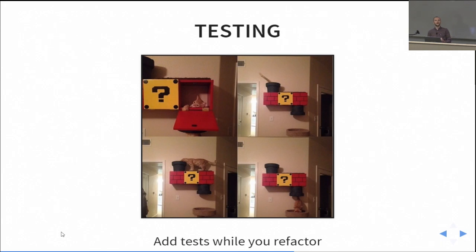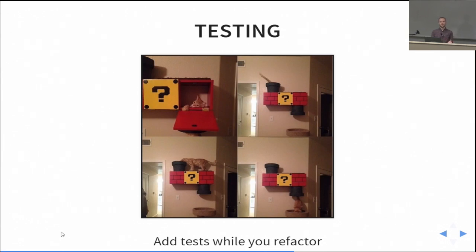That concludes the 'pulling things apart' section. Now that you understand why and how to separate concerns, it affords you the opportunity to write automated tests. If you're planning to write automated tests, do it alongside the refactoring — otherwise you might write code that seems testable but later realize isn't when you come back months later to author tests.